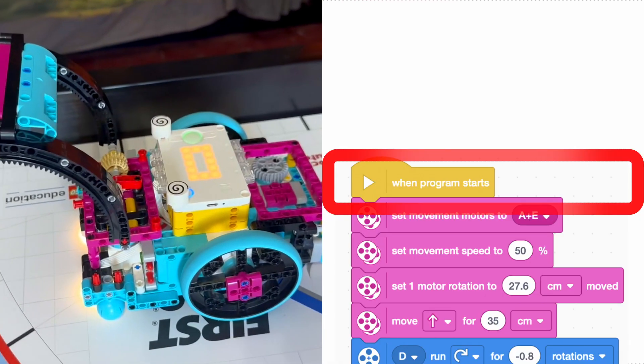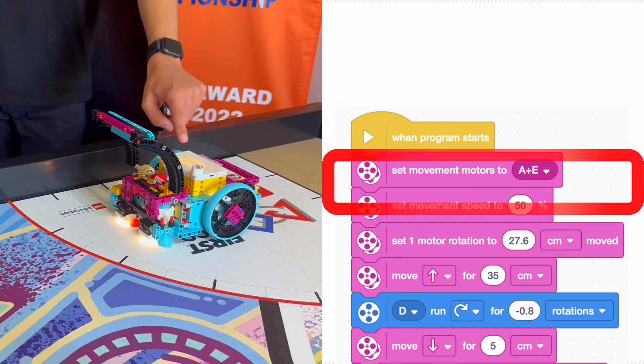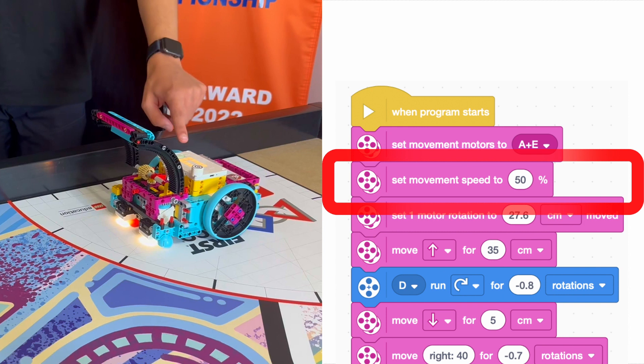Next, we'll show you how we programmed our robot for this mission. We first set the movement motors to A and E so that the hub or brain of the robot knew which motors to move. We then set our movement speed to 50% for more accuracy because the robot moves really fast at 100%.